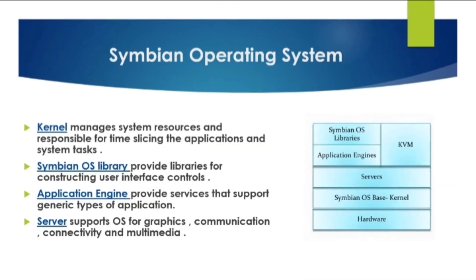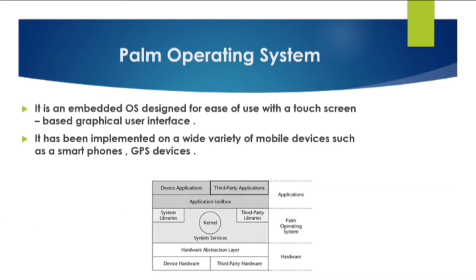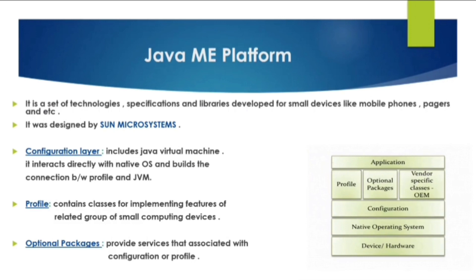The Symbian operating system kernel manages system resources and is responsible for time-slicing application and system tasks. It also includes the Symbian OS library and application engines and servers. POM OS is an embedded OS designed for touch-screen-based graphical user interfaces. Java ME platform is a set of technologies, specifications, and libraries developed for small devices like mobile phones; it was designed by Sun Microsystems.